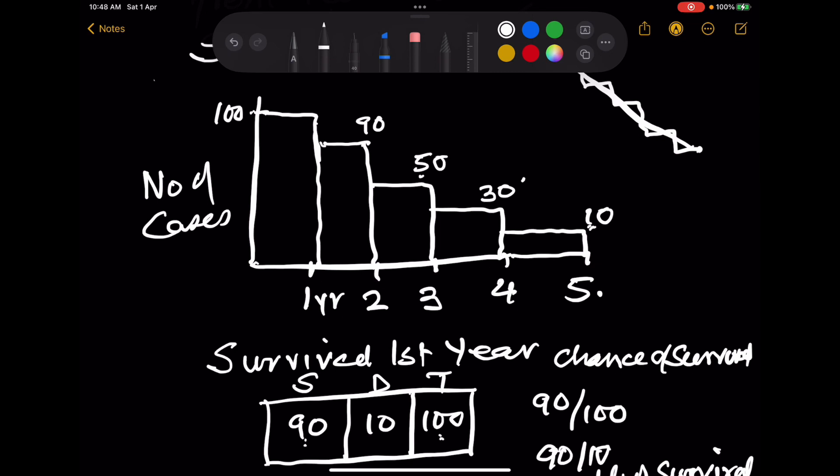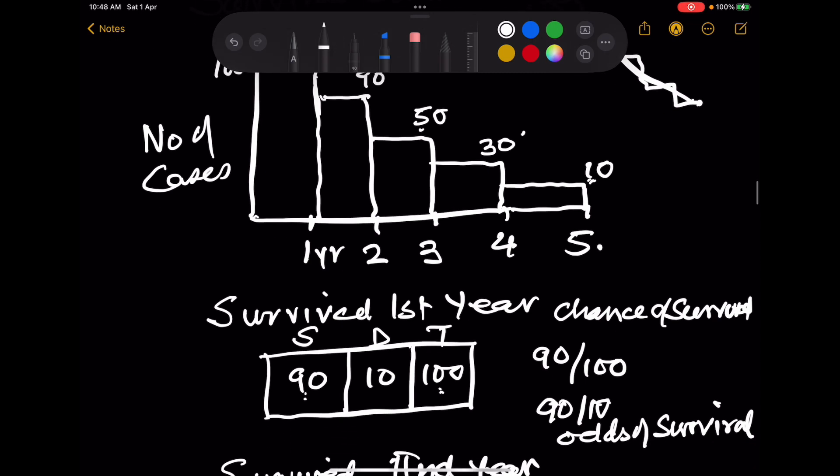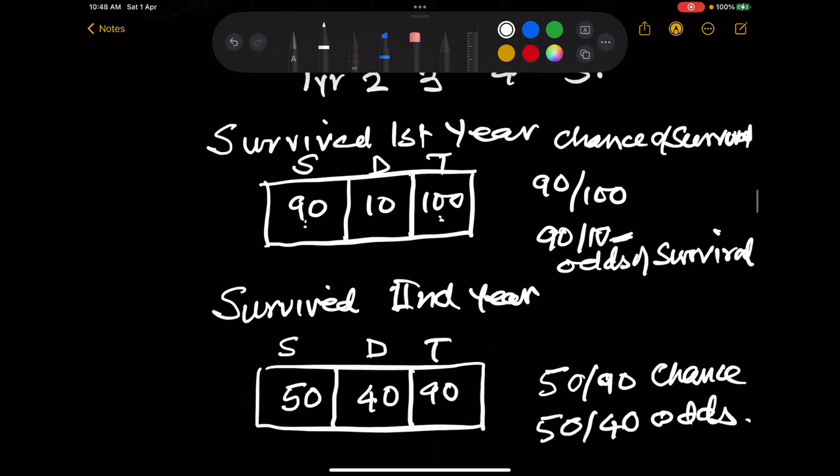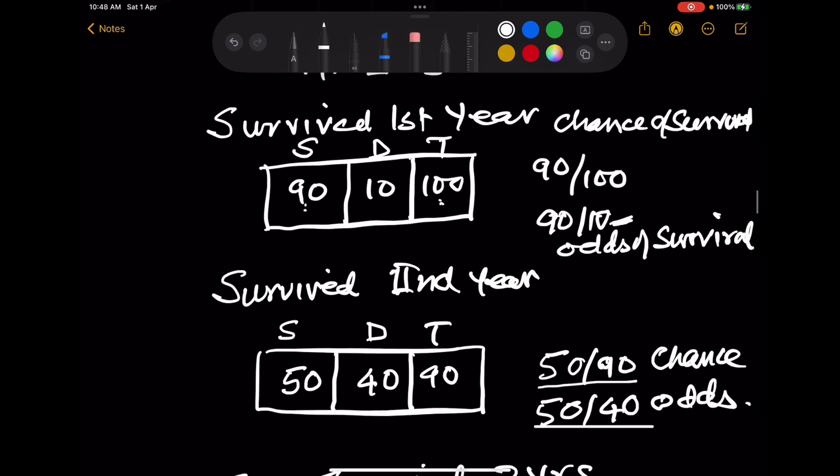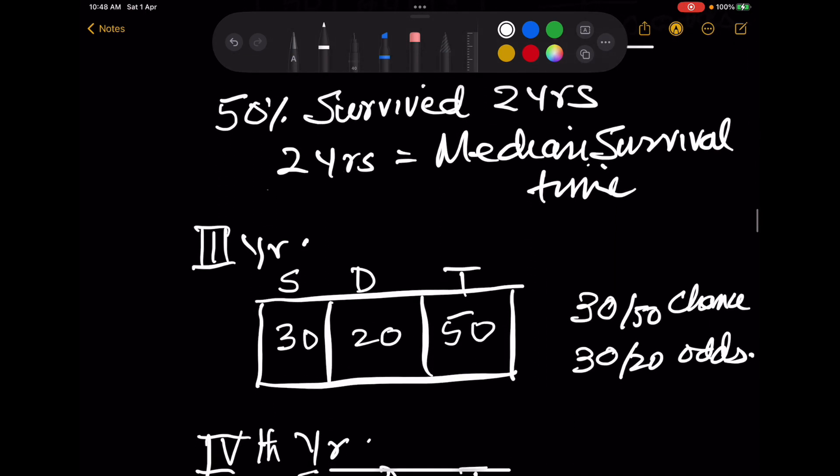Therefore risk, or chance of survival, is 90 upon 100, but the odds of survival is 90 upon 10. In the odds the denominator does not contain the numerator. In the second year 50 survived, 40 died out of 90, so chance is 50 upon 90 and odds are 50 upon 40. Similarly we do it over all years.